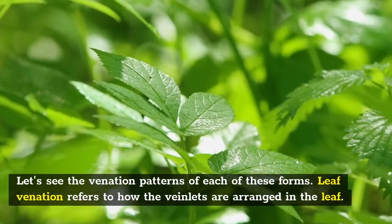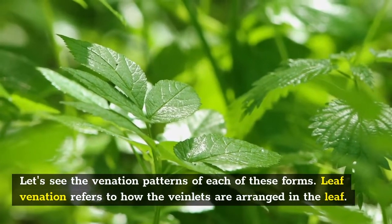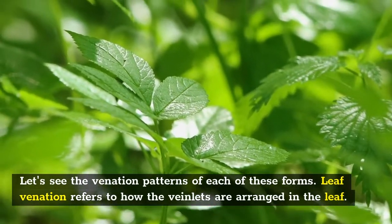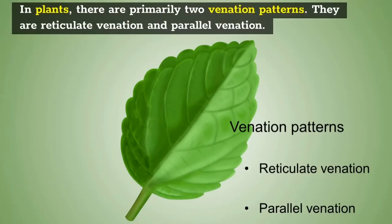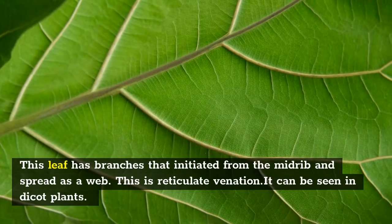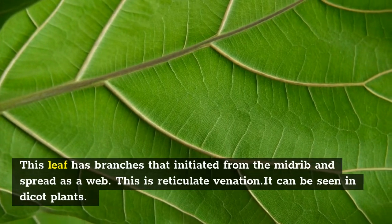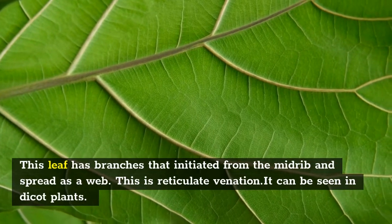Let's see the venation patterns of each of these forms. Leaf venation refers to how the veinlets are arranged in the leaf. In plants, there are primarily two venation patterns: reticulate venation and parallel venation. This leaf has branches that initiated from the midrib and spread as a web — this is reticulate venation. It can be seen in dicot plants.